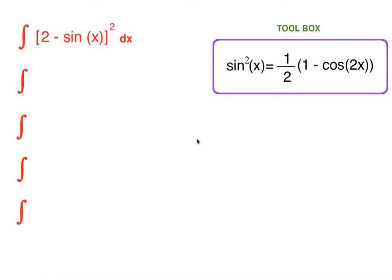Hello everybody, in this video we're going to integrate [2 - sin(x)]² dx. Let's start. Our first step is to FOIL 2 - sin(x). You can multiply it out, or you can directly use this formula: (a - b)² = a² - 2ab + b².